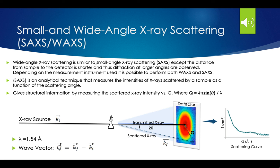Small and wide-angle X-ray scattering. Wide-angle X-ray scattering is similar to small-angle X-ray scattering, except the distance from sample to detector is shorter, and because of that, diffraction maxima at larger angles are observed. Depending on the instrument used, it is possible to perform both WAXS and SAXS, which our machine does — it's the XEUSS 2.0 by Xenocs. SAXS is an analytical technique that measures the intensities of X-rays scattered by a sample as a function of the scattering angle.